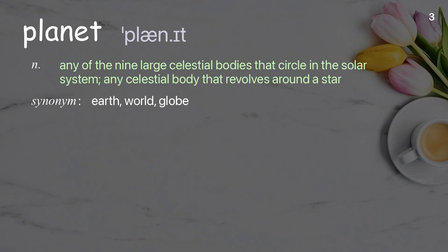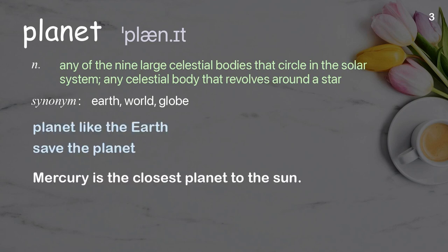Planet: any of the nine large celestial bodies that circle in the solar system; any celestial body that revolves around a star. Examples: planet like the Earth, save the planet. Mercury is the closest planet to the sun.